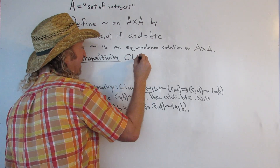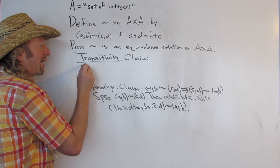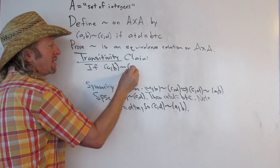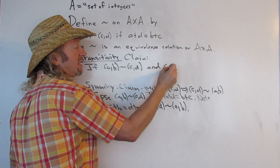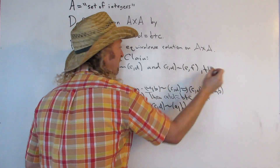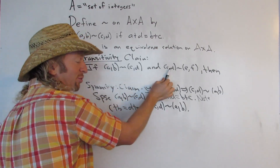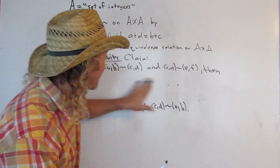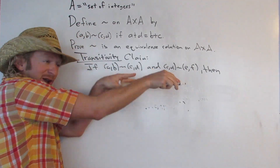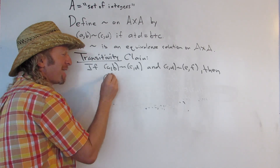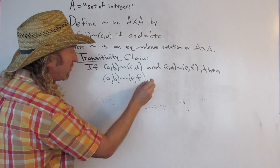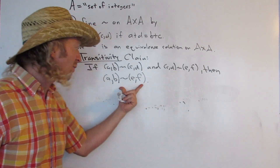What is the claim for transitivity? It's a little bit harder. The claim is that if AB is related to CD, and CD is related to EF, then AB is related to EF — it's transitive, it transmits. We start by assuming the first two are true and then show the third is true.